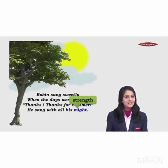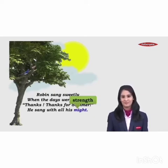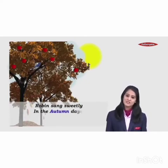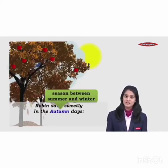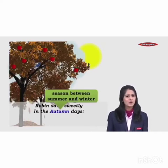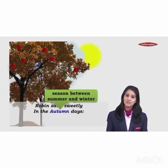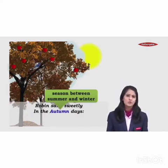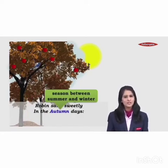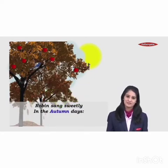He is using all his strength and singing the most beautiful song in the season of summer. Now the next stanza: Robin sang sweetly in the autumn days. Autumn is a season between summer and winter — seasons we know and have in our country — so you will probably understand that autumn comes between summer and winter.